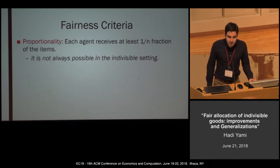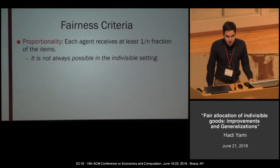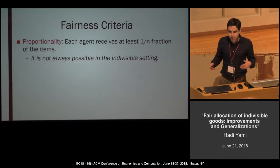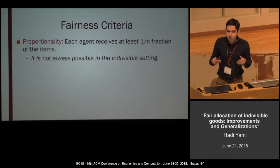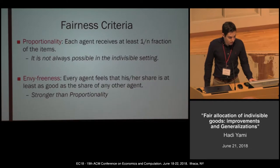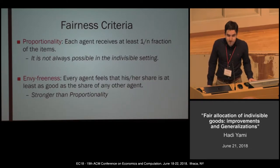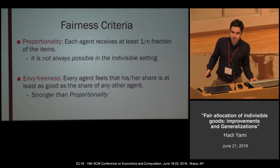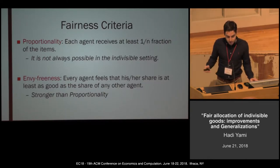There are lots of fairness criteria in the literature, but maybe two of the most famous ones are proportionality and envy-freeness. By proportionality we mean each agent receives at least one-over-n fraction of the value of all the items. Unfortunately, in the indivisible setting it's not possible to have any proportional allocation — if you have two agents and one item, clearly we must allocate it to one agent, which is not proportional. Envy-freeness is stronger than proportionality; each agent prefers his own allocation more than any other agent's allocation.